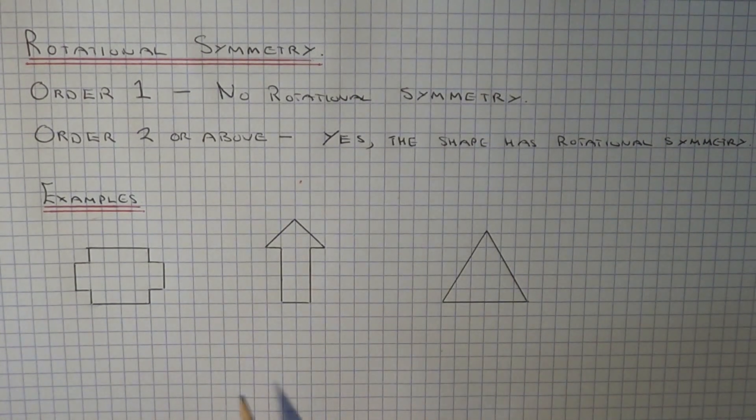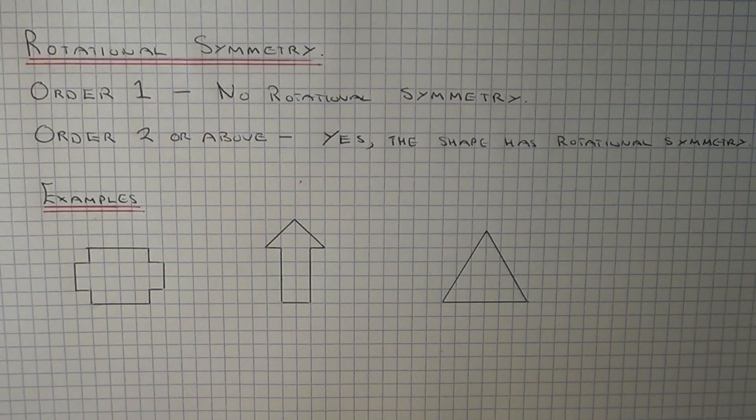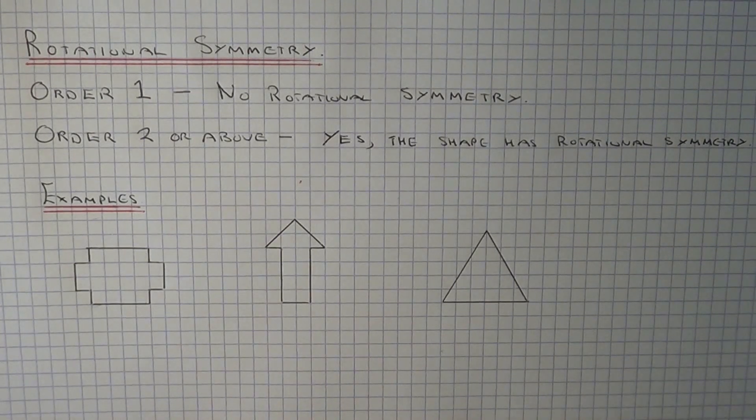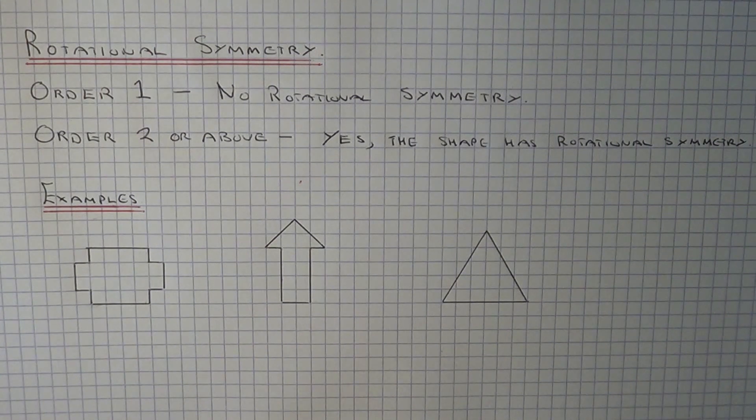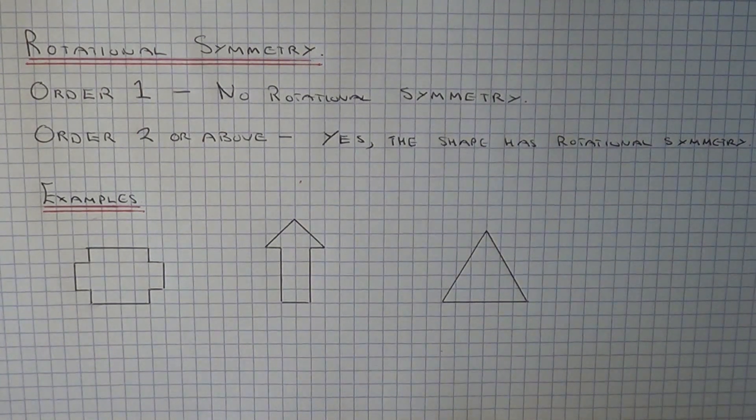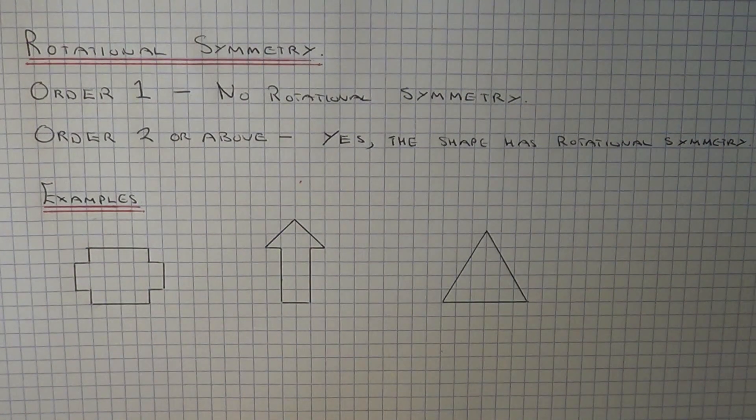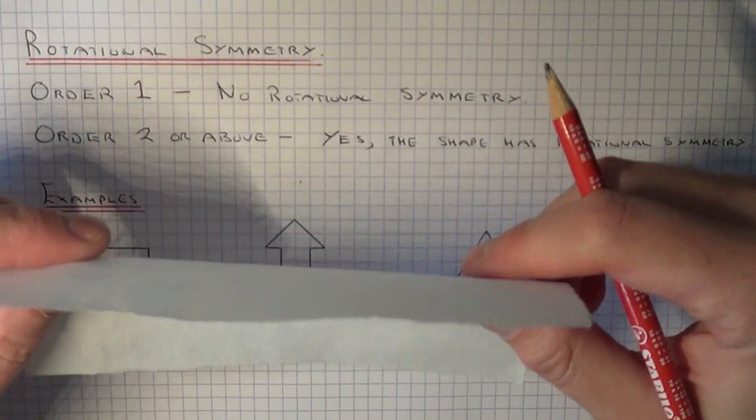So let's have a look at three examples here. So for each shape, we're going to determine whether the shape has Rotational Symmetry or not, and also work out the order of Rotational Symmetry. Now, before you start, you will need to get yourself some tracing paper.